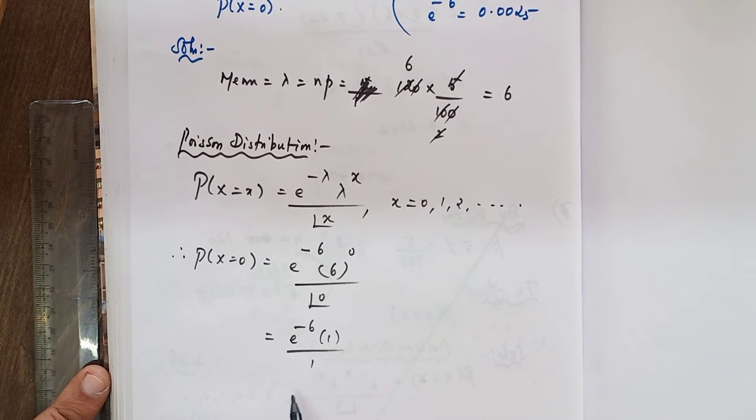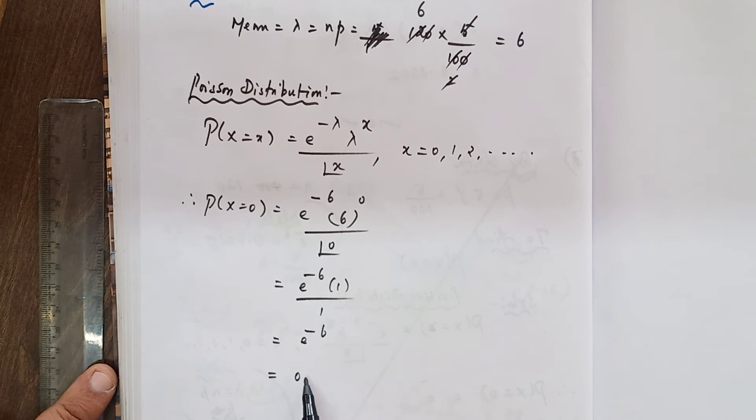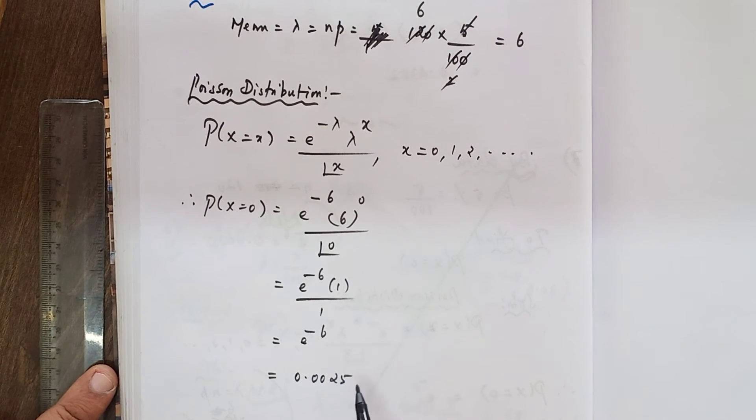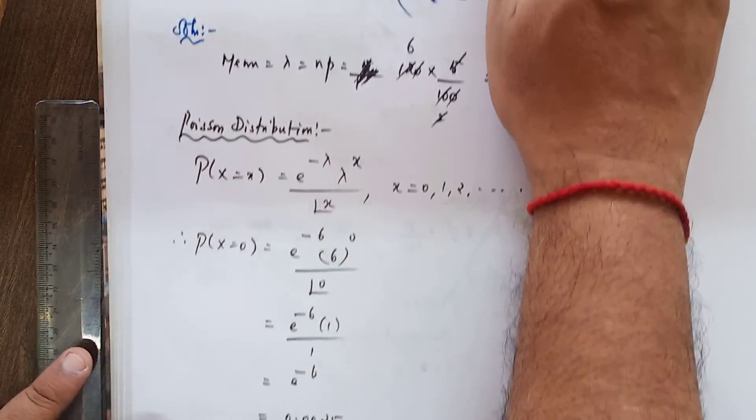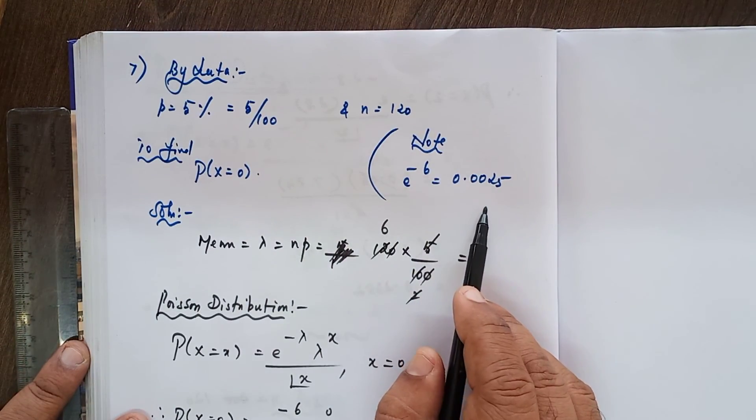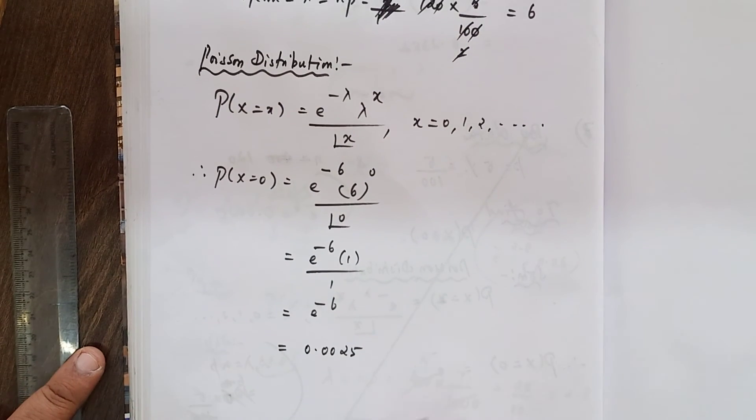e power minus 6 value equals 0.0025, that is given here. So e power minus 6 equals 0.0025. That is all.